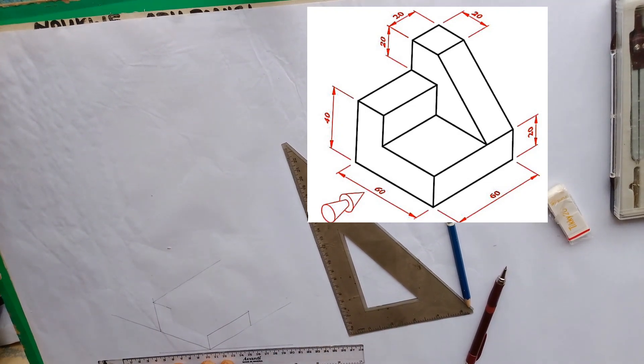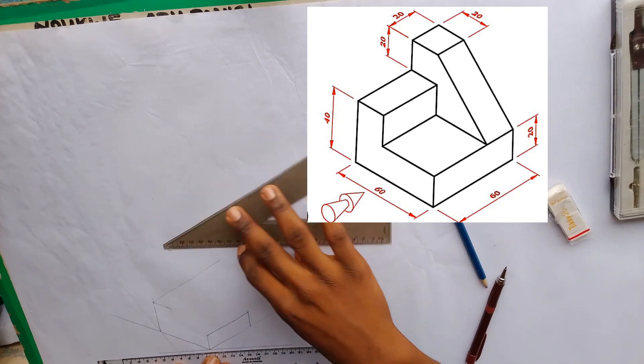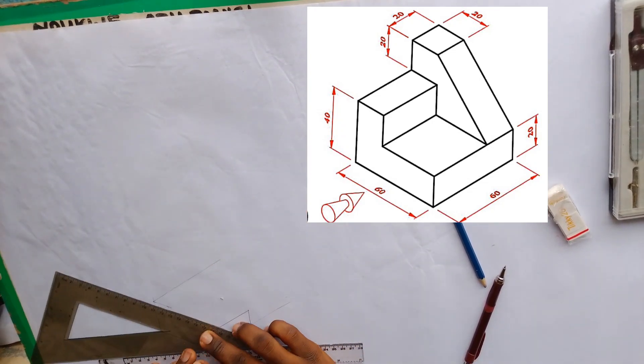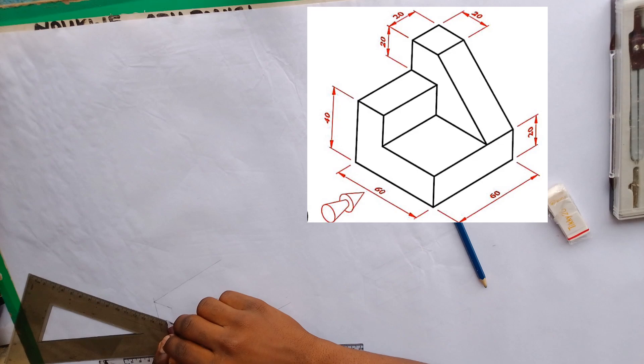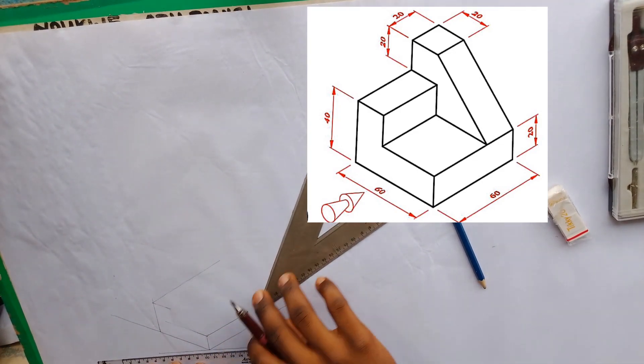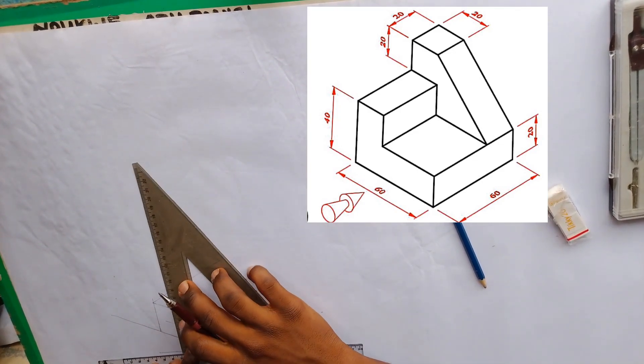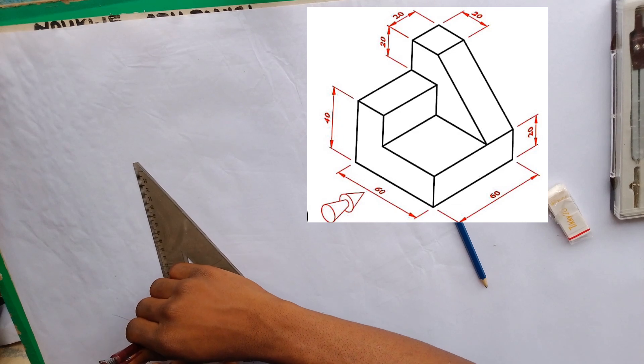I'm going to draw a line from here to here using our set square. Then I'll draw a vertical line. Where the two meet is our junction.